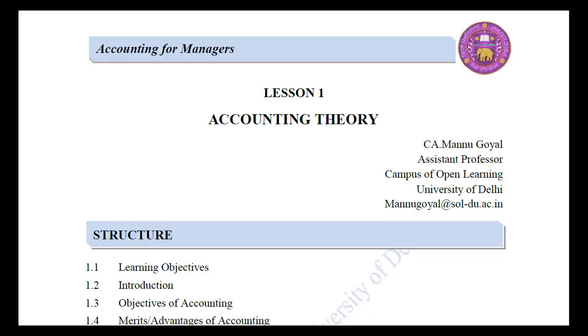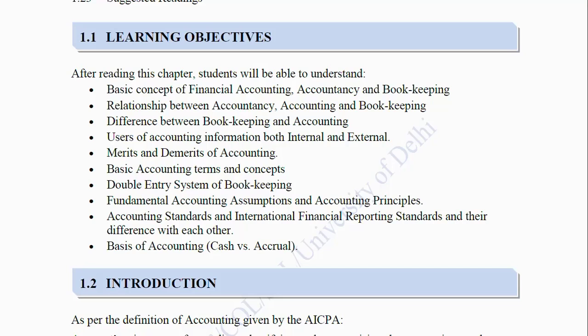Lesson 1: Accounting Theory. Learning Objectives: After reading this chapter, students will be able to understand basic concepts of financial accounting, accountancy and bookkeeping; the relationship between accountancy, accounting and bookkeeping; difference between bookkeeping and accounting; users of accounting information both internal and external; merits and demerits of accounting; basic accounting terms and concepts; double entry system of bookkeeping; fundamental accounting assumptions and accounting principles; accounting standards and international financial reporting standards and their differences; and basis of accounting — cash versus accrual.